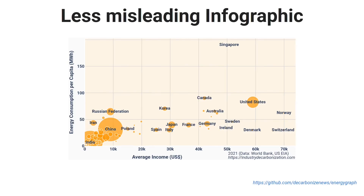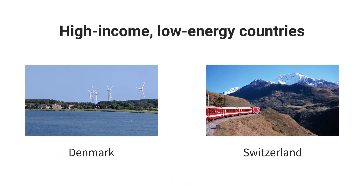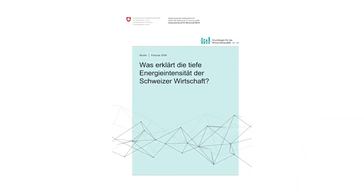If you look for rich countries with a rather low energy consumption, Denmark and Switzerland are the most extreme examples — they are very rich but use less than half of, for example, the United States. The Swiss government made a study analyzing this, and you might think it's because Switzerland has pharma and finance industries without much heavy industry. They asked exactly that question and concluded that yes, that plays a role, but the main reason is that they are basically doing the same things with less energy, even compared to other European countries that are already quite energy efficient. So energy efficiency really matters here.